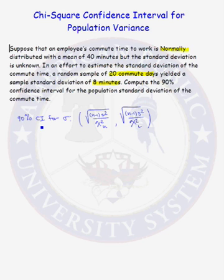The 90% confidence interval for a population standard deviation is given by the square root of the quantity n minus 1 times the sample variance divided by a chi-squared critical value, and the upper bound of the confidence interval is the quantity n minus 1 times the sample variance divided by another chi-squared critical value.